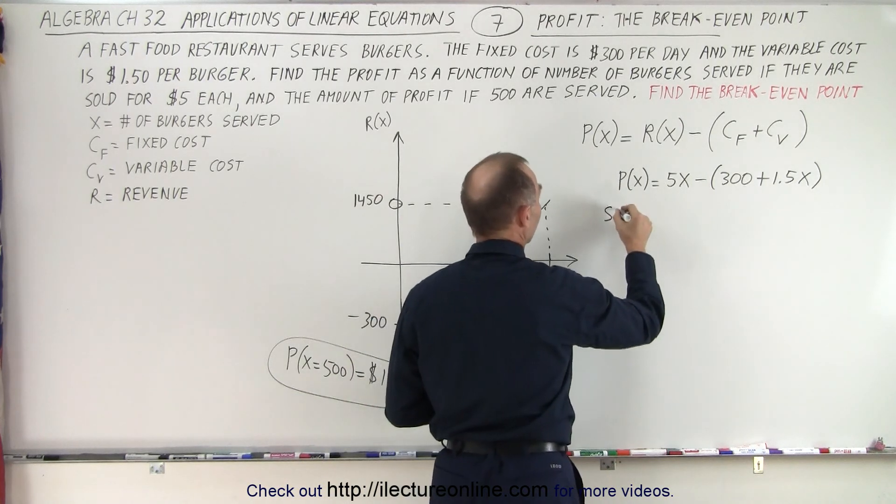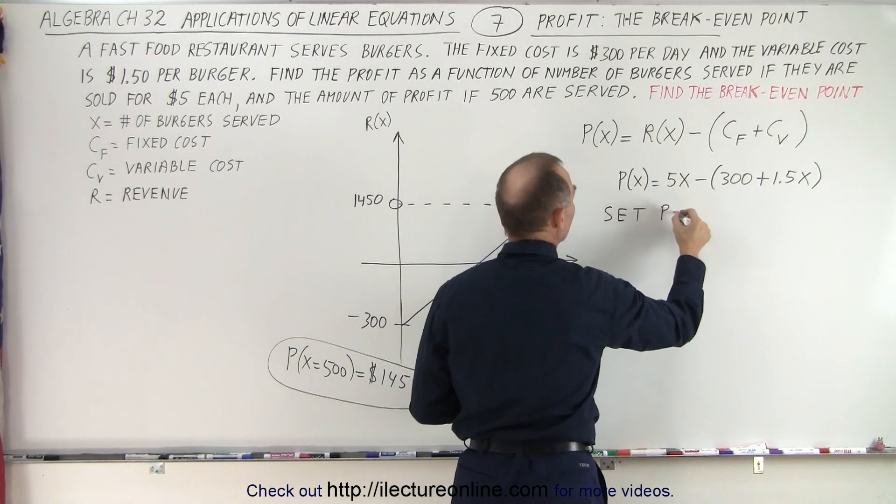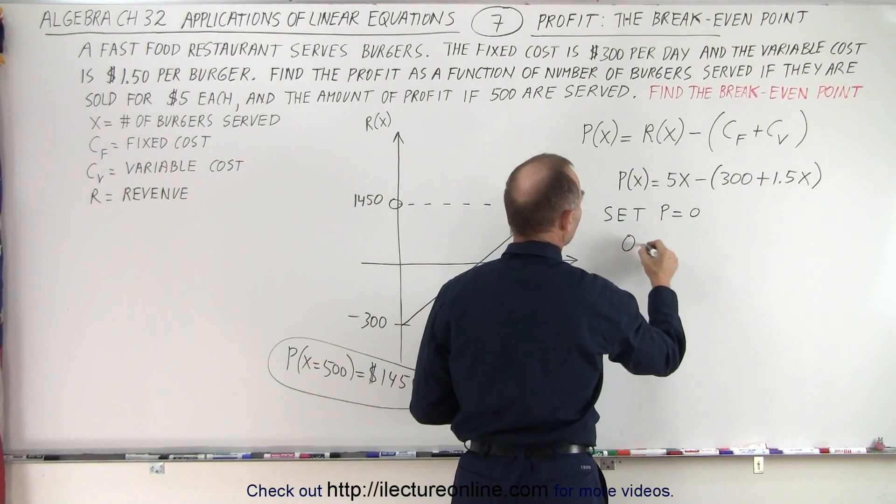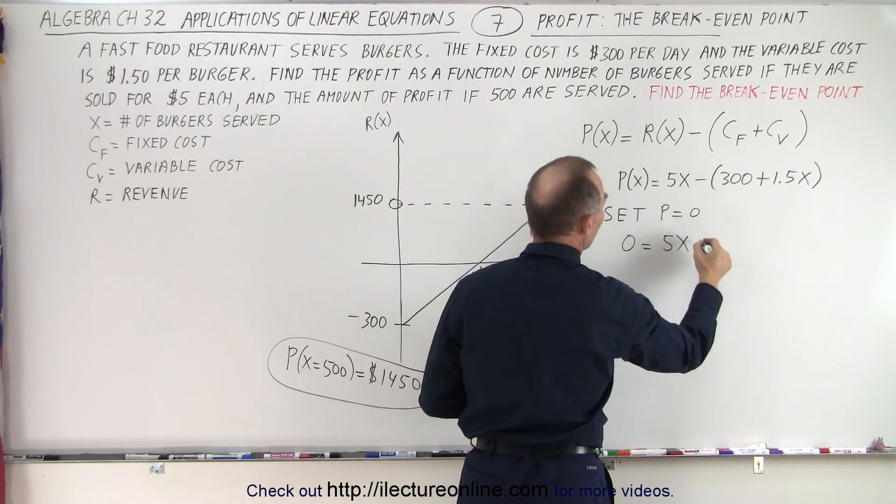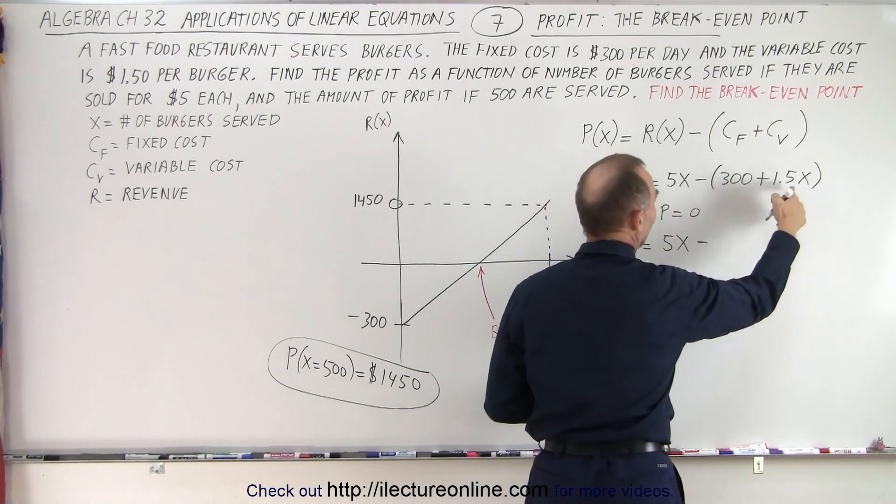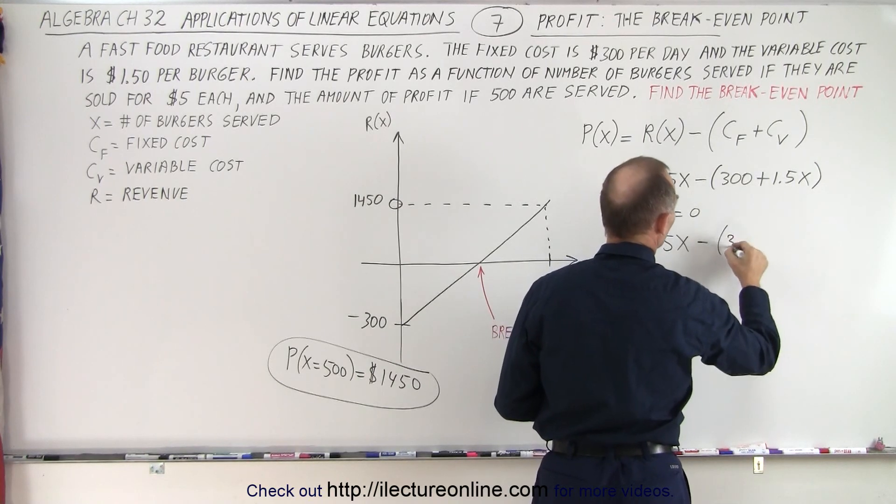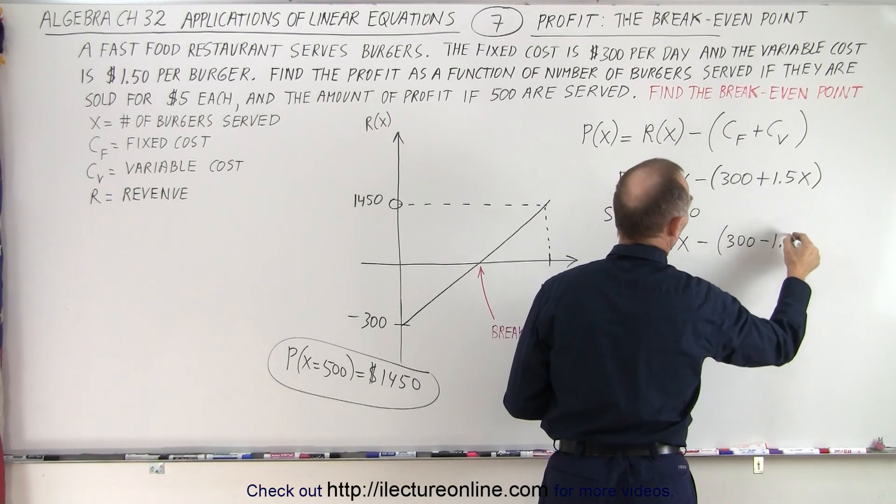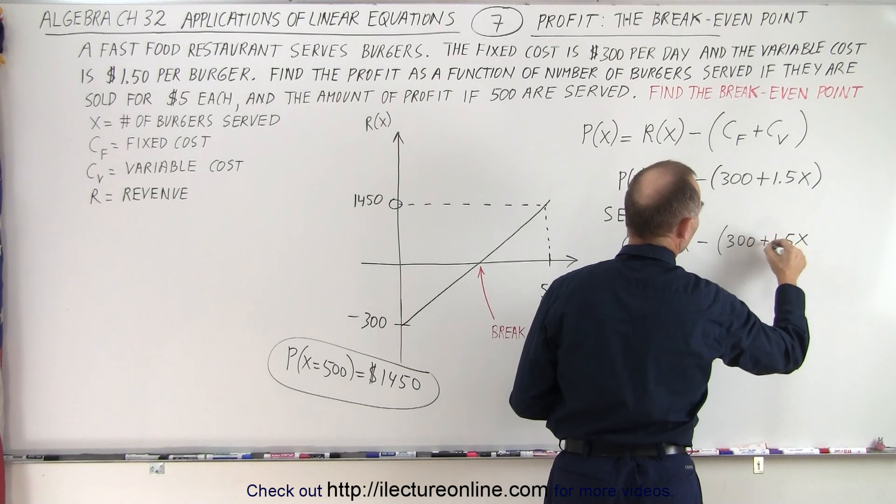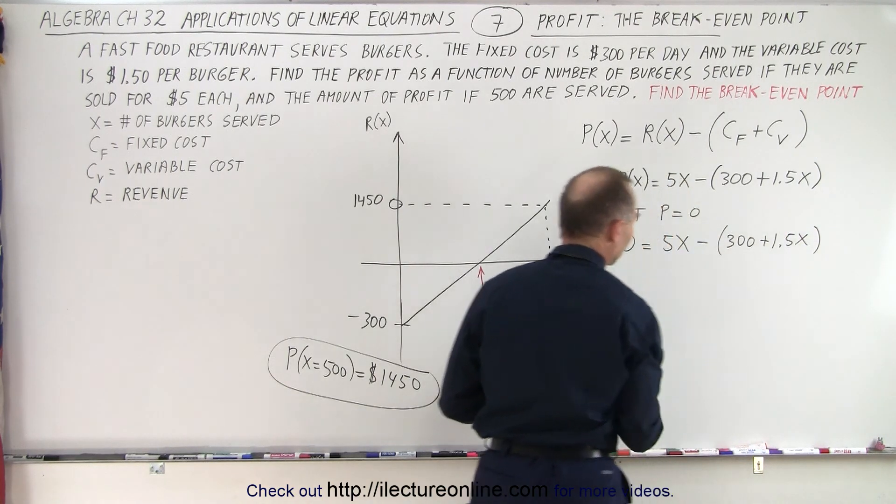So we're going to set P equal to zero, so we end up with zero equals 5x, which represents the revenue, minus the fixed cost added to the variable cost, which is 300 minus 1.5x. Oh, not minus but plus, because we have to add this but this will make that a negative.